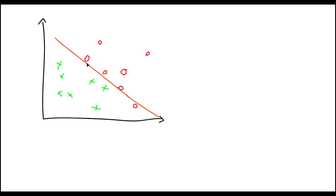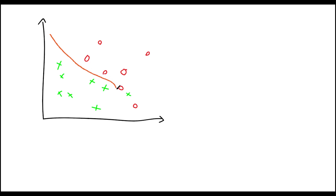We can also have something called logistic regression in supervised learning, where we still have our data but it is more complex. Instead of a straight linear line, we could have a curved line that maps more closely to the data — for example if we have a real email point on one side and negatives on the other, the line curves to fit them. We try to train the model to fit as close as possible to the labeled data.